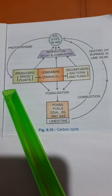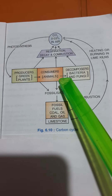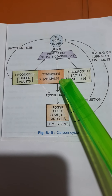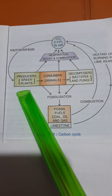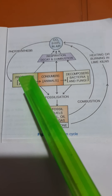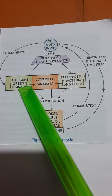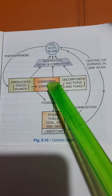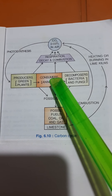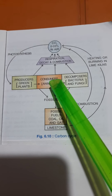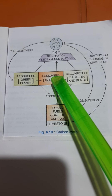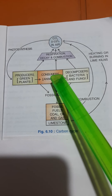The food goes through the food chain, so carbon is entering from one trophic level to another in the food chain.